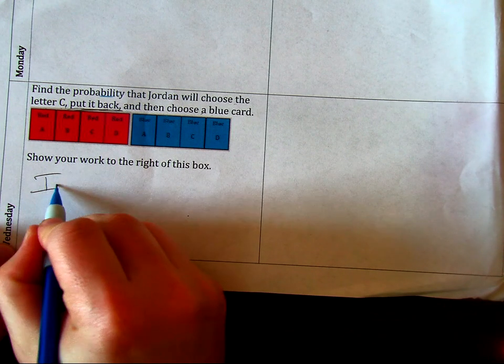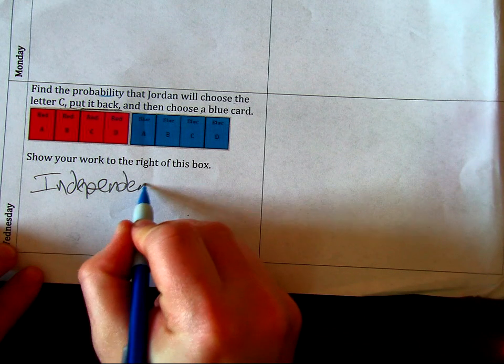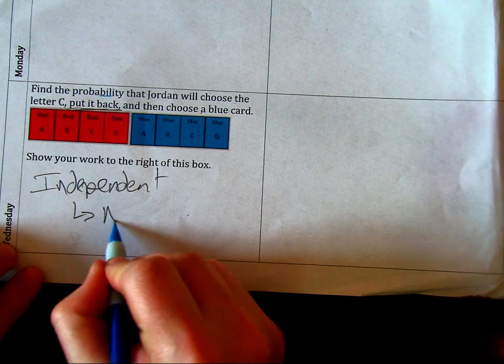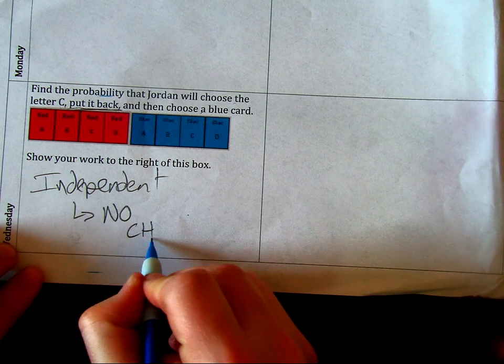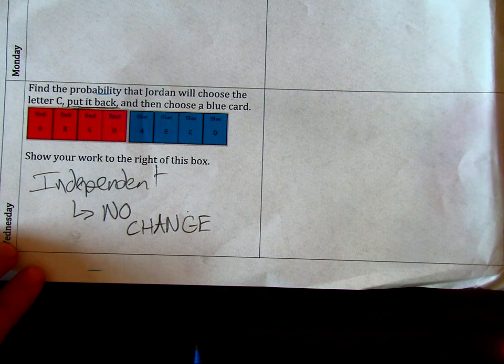That means that it's going to be independent. The reason why it's independent, that means it's no change. We're not changing the denominator at all, so it's not affecting the outcome.